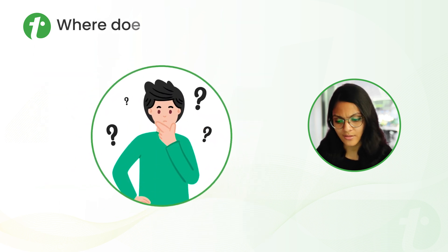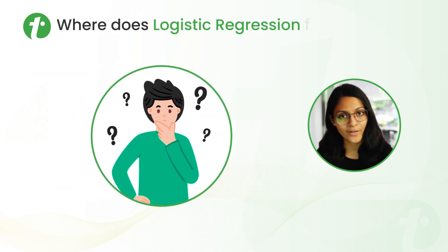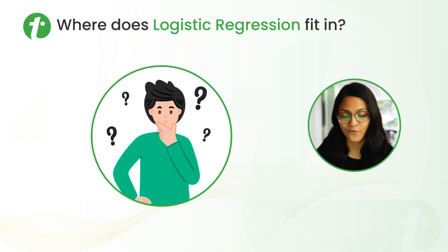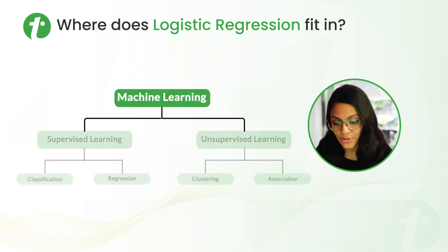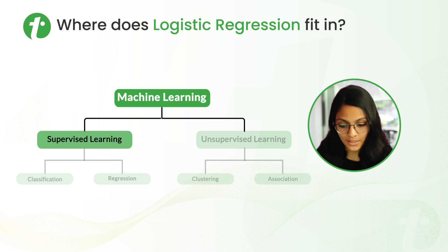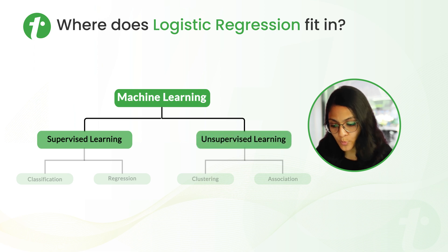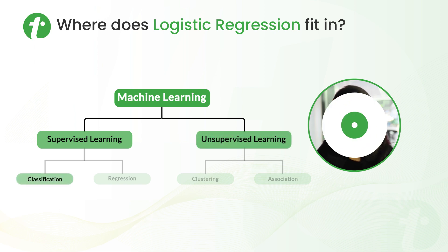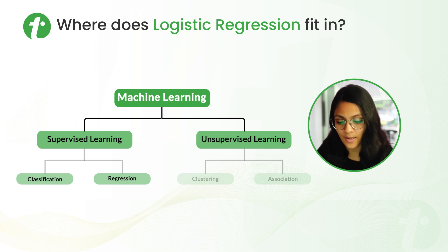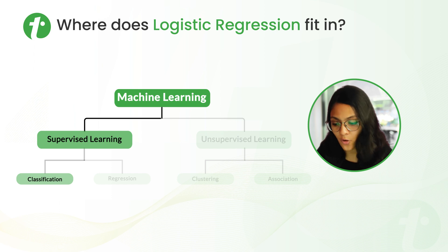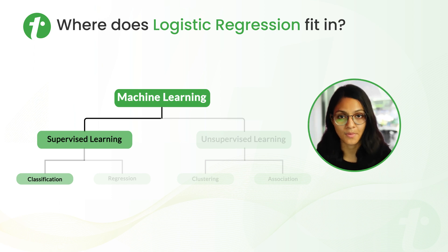Now the question arises: where does Logistic Regression fit in? Machine Learning algorithms are divided into two types: Supervised Learning and Unsupervised Learning. Supervised Learning is further divided into Classification and Regression, and Unsupervised is further divided into Clustering and Association. Our Logistic Regression falls under Supervised Learning for solving classification type problems.